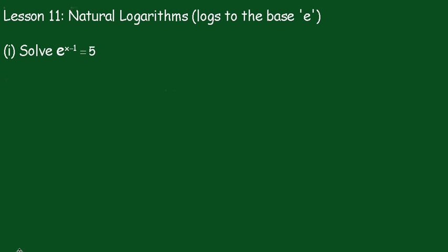Lesson 11: Natural Logarithms, logs to the base E. Before we start this lesson, we need to understand what E is. E is an irrational number equal to 2.71828, and it just keeps going on like pi, but it's a very important number you'll meet later on when doing applications of calculus.